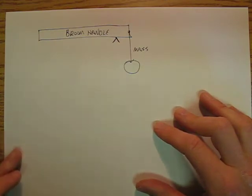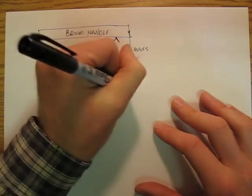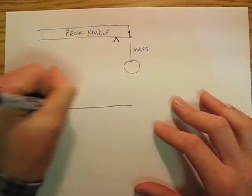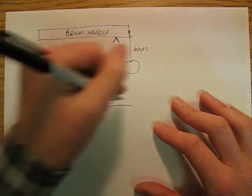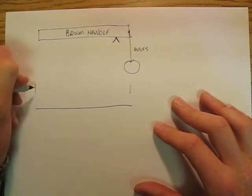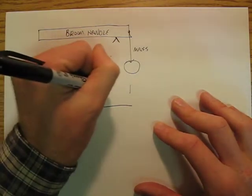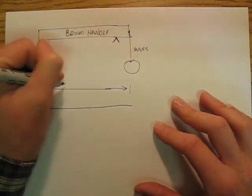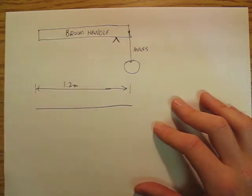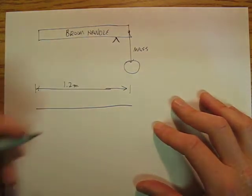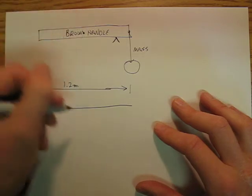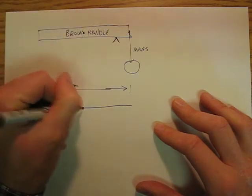Looking at this schematically, we're going to say we've got a broom handle that's 1.2 meters long. The center of mass of that broom handle is going to be right in the middle of the broom handle.